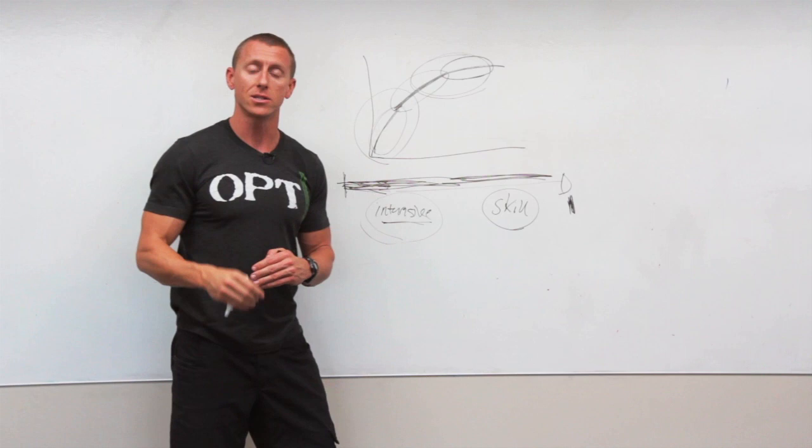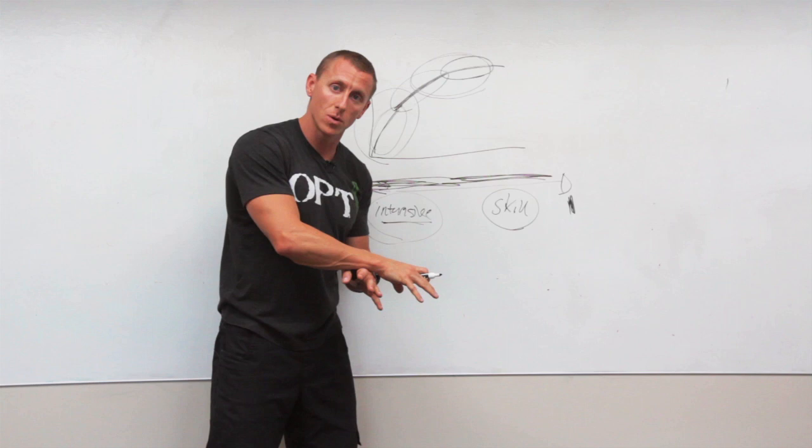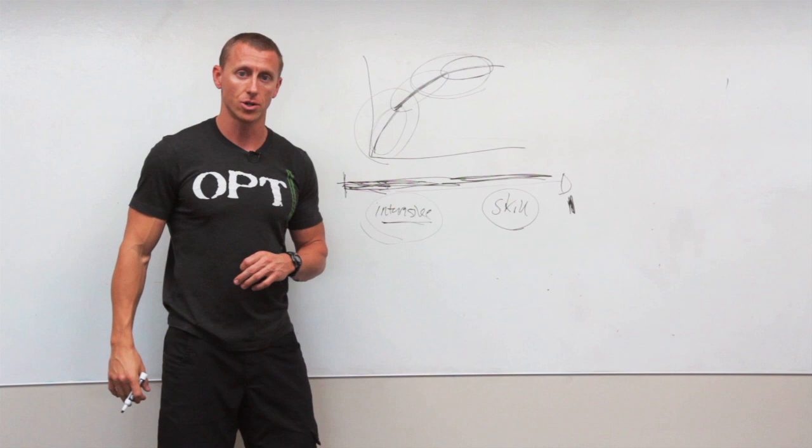So most of her training should be skill-based training. So what that means is more training, less testing. More submaximal work, less maximal work. And what this creates is a better longevity piece for Jane long term because we are taking into consideration where she sits on that curve.